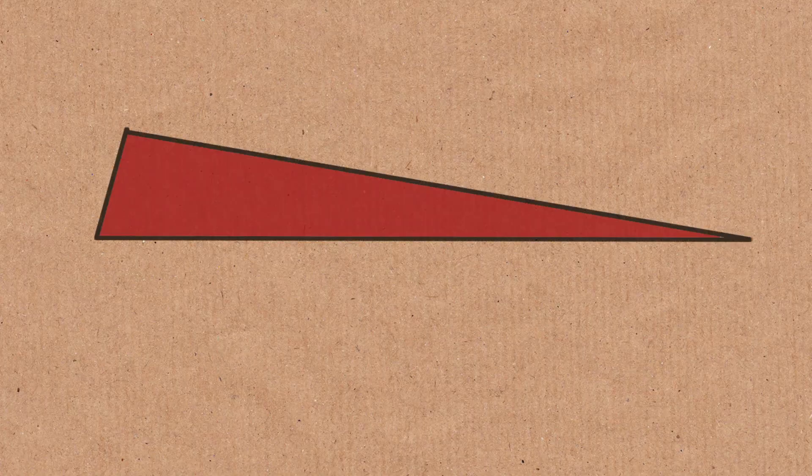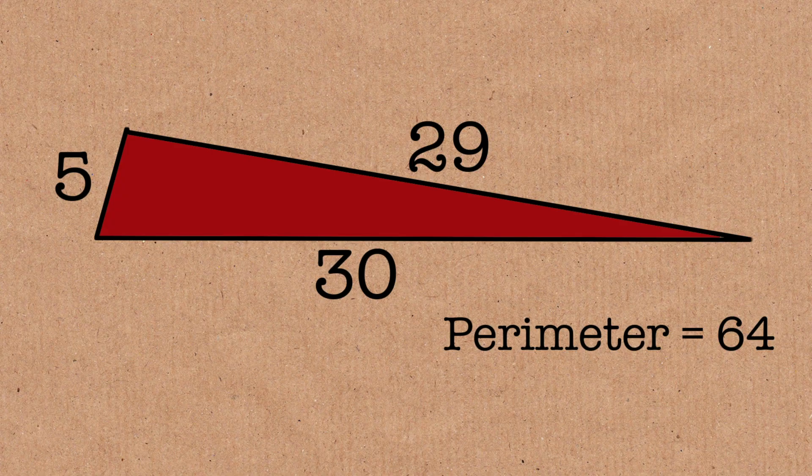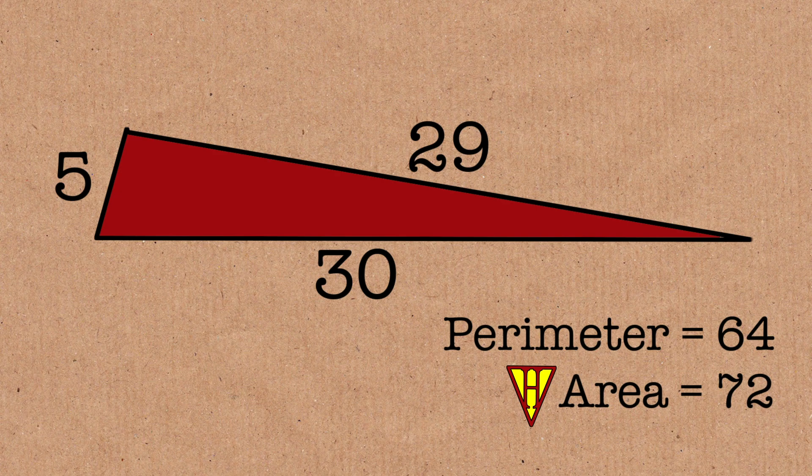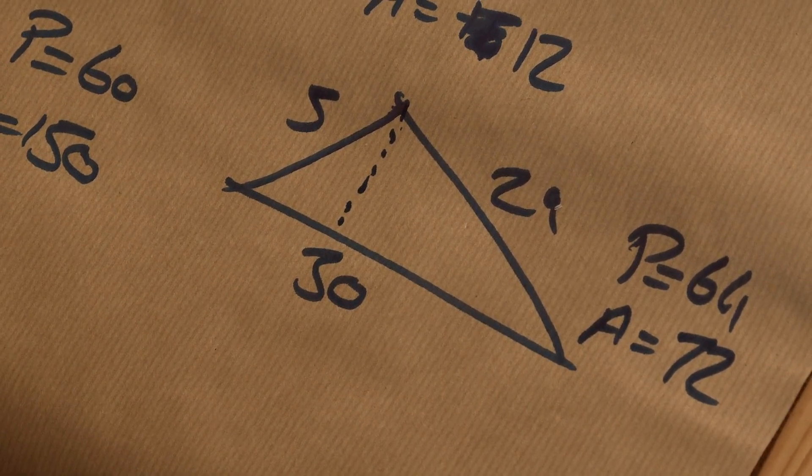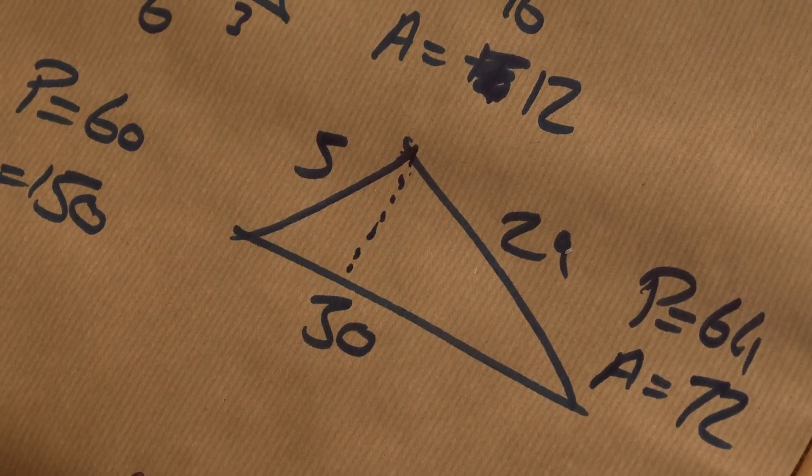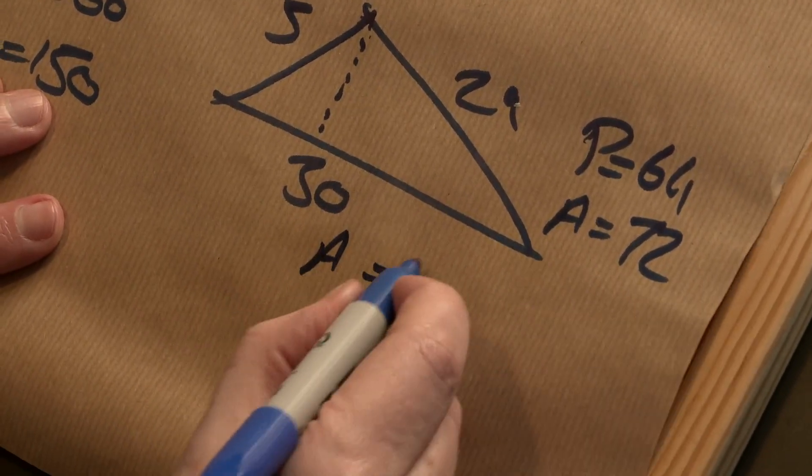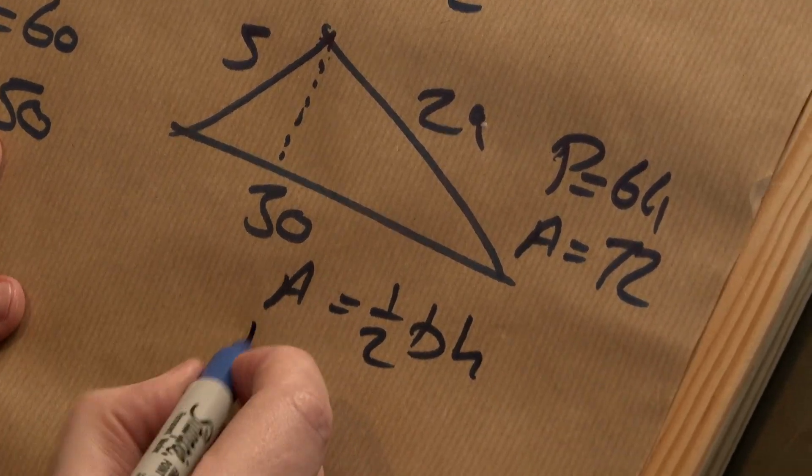So you can do triangles that aren't cheats. Here is a 5, 29, and 30. So here's a triangle with a perimeter of 64 and an area of 72. And that cannot be broken up into two right-angled triangles that are Pythagorean. If you drop a vertical line here, well, we know it's half the base times the height. We're trying to work out the height now. So area is half base times height. I'm trying to work out the height.